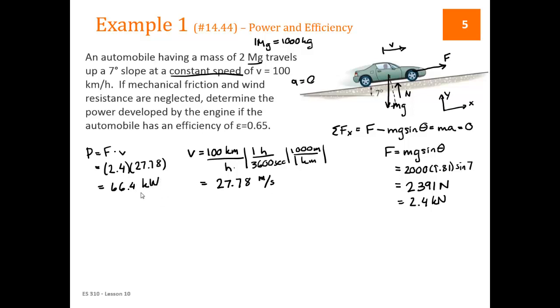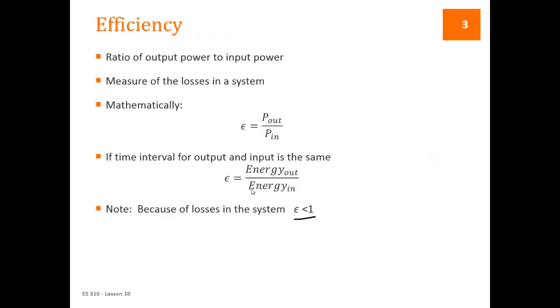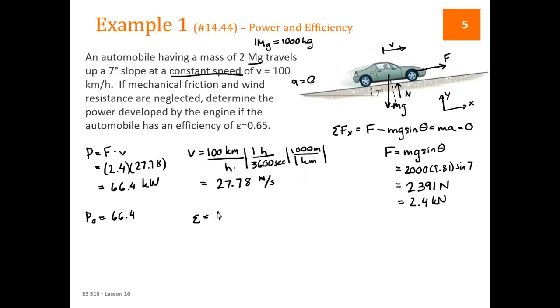So which power is this? The input power or the output power? Well, it's the power that's causing the car to go up the slope. So this would be the output power. So P out is 66.4. Efficiency is equal to P out over P in. So to find P in, we take P out and we divide by the efficiency. So 66.4 kilowatts divided by the efficiency of 0.65 is equal to 102 kilowatts. And that then is the power input to the engine.